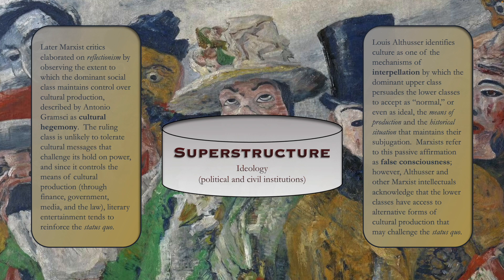Louis Althusser identifies culture, including literary production, as one of the mechanisms of what he calls interpolation — his word for the way the dominant upper class persuades the lower classes to accept as normal or even ideal the means of production and historical situation that maintains their subjugation, so that the lower classes never achieve an independent class consciousness to challenge those who hold power. Marxists refer to this passive affirmation as false consciousness. However, Althusser and other Marxist intellectuals acknowledge that the lower classes have access to alternative forms of cultural production that may challenge the status quo.